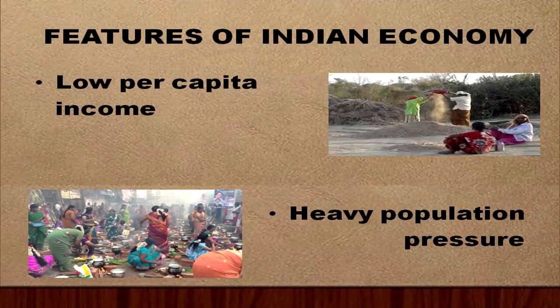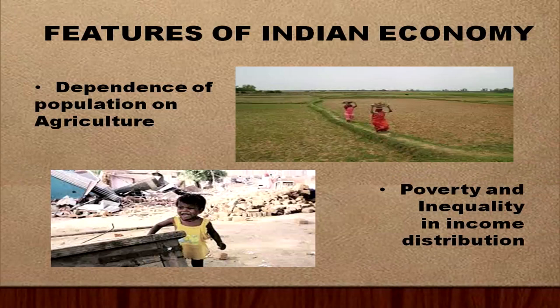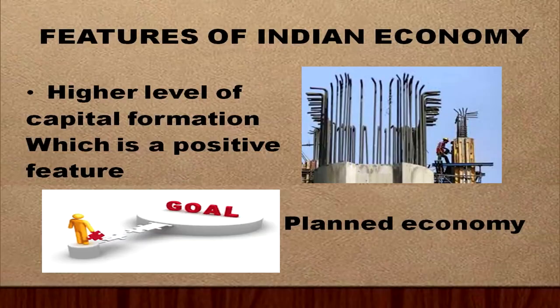The first feature of the Indian economy is that it has a low per capita income. Secondly, there is heavy population pressure. Thirdly, there is heavy dependence of population on agriculture. Fourth, there is poverty and inequality in income distribution. There is also a higher level of capital formation — a definite positive feature — and the fact that India is a planned economy, planning to reach certain goals.